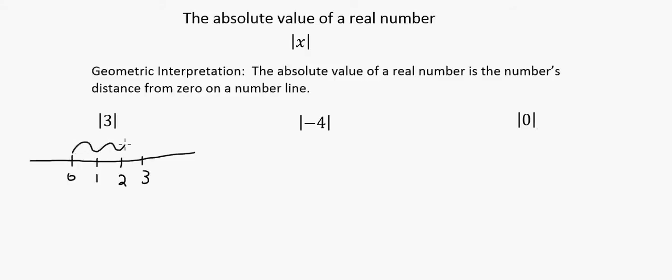Well, it seems like a kind of silly question. 3 is, of course, 3 away from 0, so the absolute value of 3 equals 3.